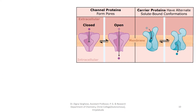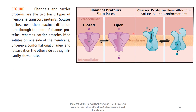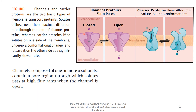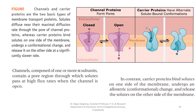Channels and carrier proteins are the two basic types of membrane transport proteins. Solutes diffuse near their maximal diffusion rate through channel proteins, whereas carrier proteins bind solutes on one side of the membrane, undergo a conformational change, and release them on the other side at a significantly slower rate. Channels composed of one or more alpha subunits contain a pore region through which solutes pass at high flux rate when the channel is open. In contrast, carrier proteins bind solutes on one side of the membrane, undergo an allosteric conformational change, and release the solutes on the other side.